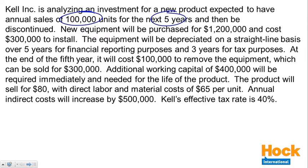New equipment will be purchased for $1,200,000 and cost $300,000 to install. The equipment will be depreciated on a straight-line basis over five years for financial reporting purposes and three years for tax purposes. At the end of the fifth year, it will cost $100,000 to remove the equipment, which can be sold for $300,000. Additional working capital of $400,000 will be required immediately and needed for the life of the product. The product will sell for $80 with direct labor and material costs of $65 per unit. Annual indirect costs will increase by $500,000 and Cal's effective tax rate is 40%.